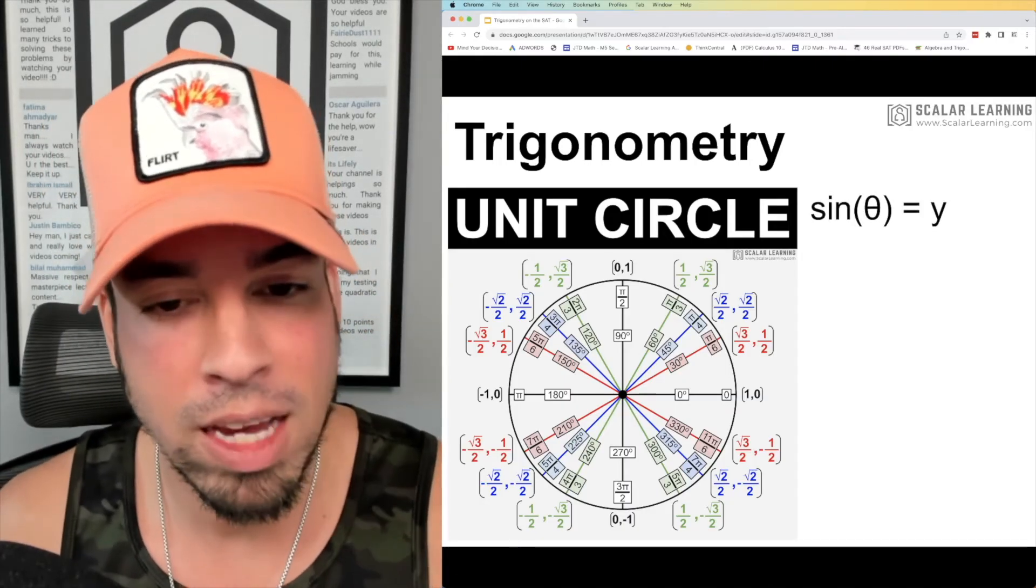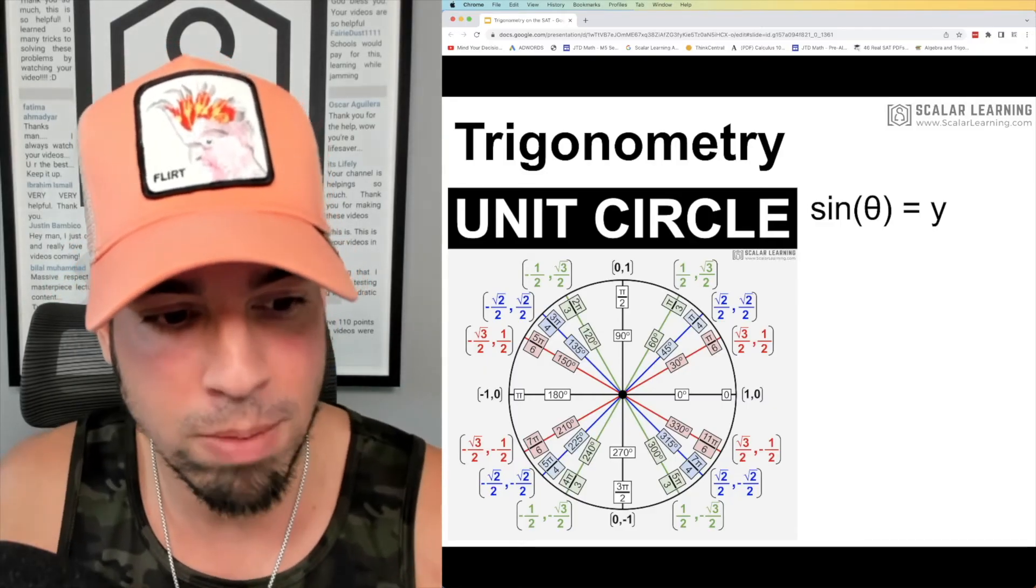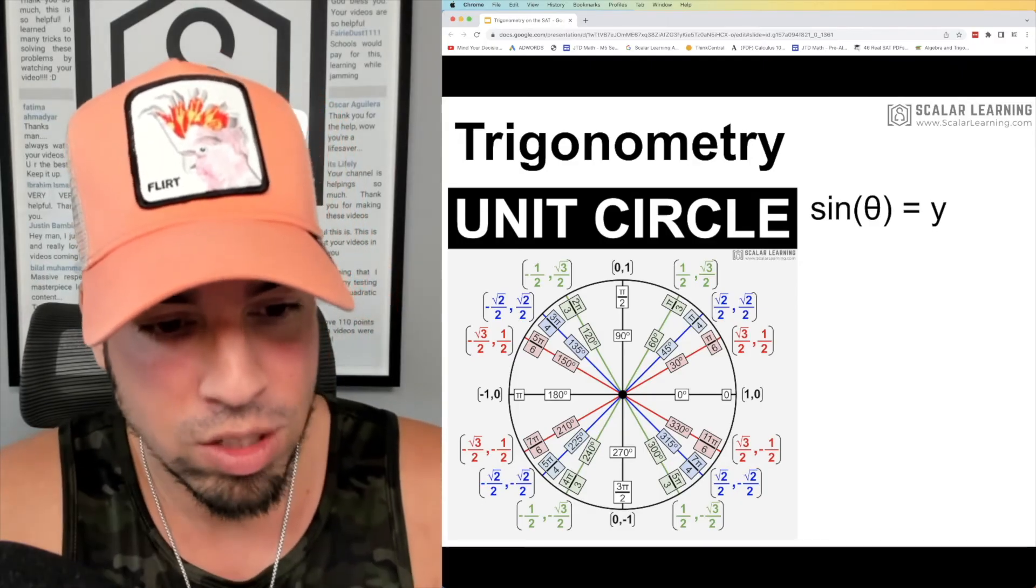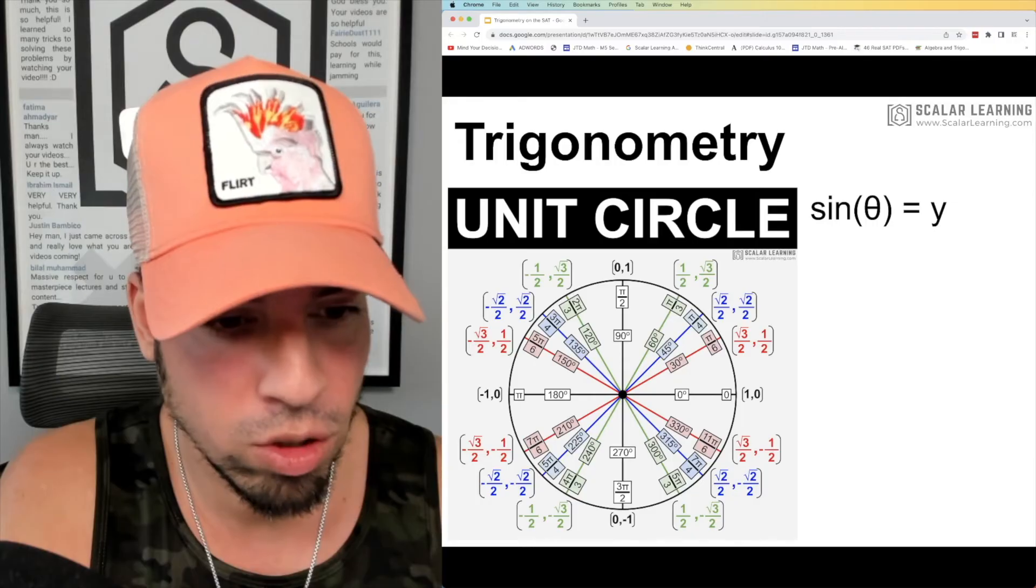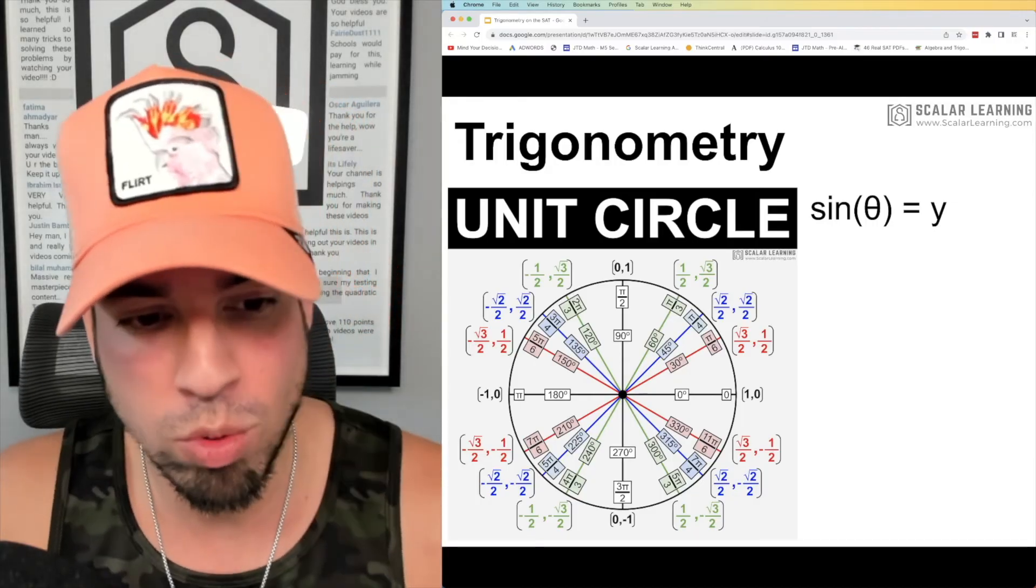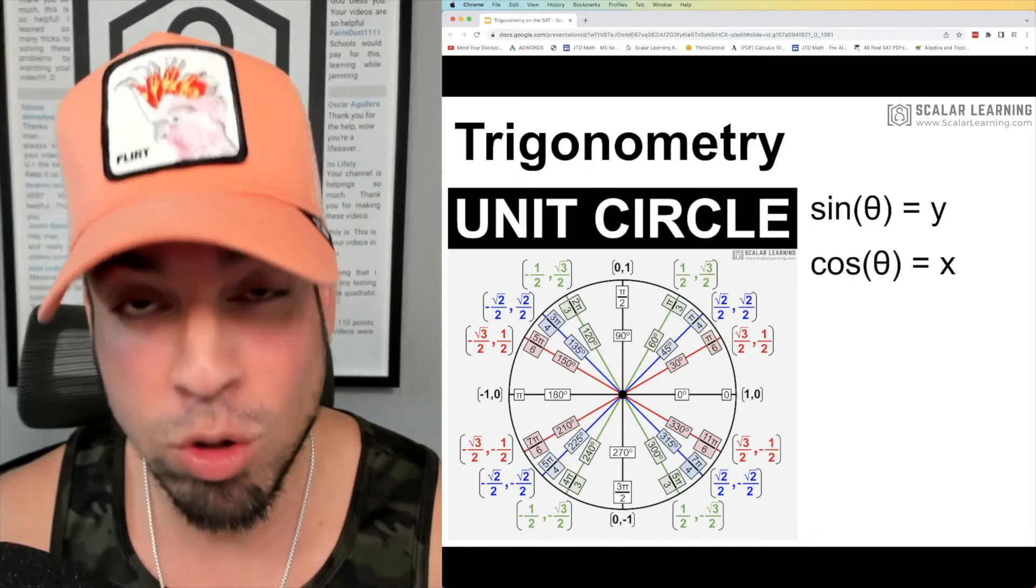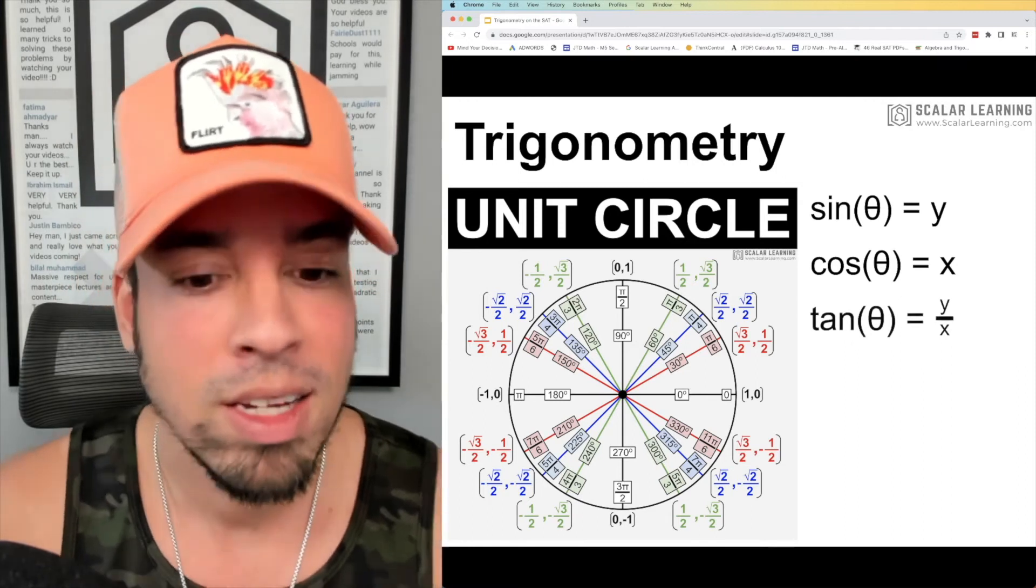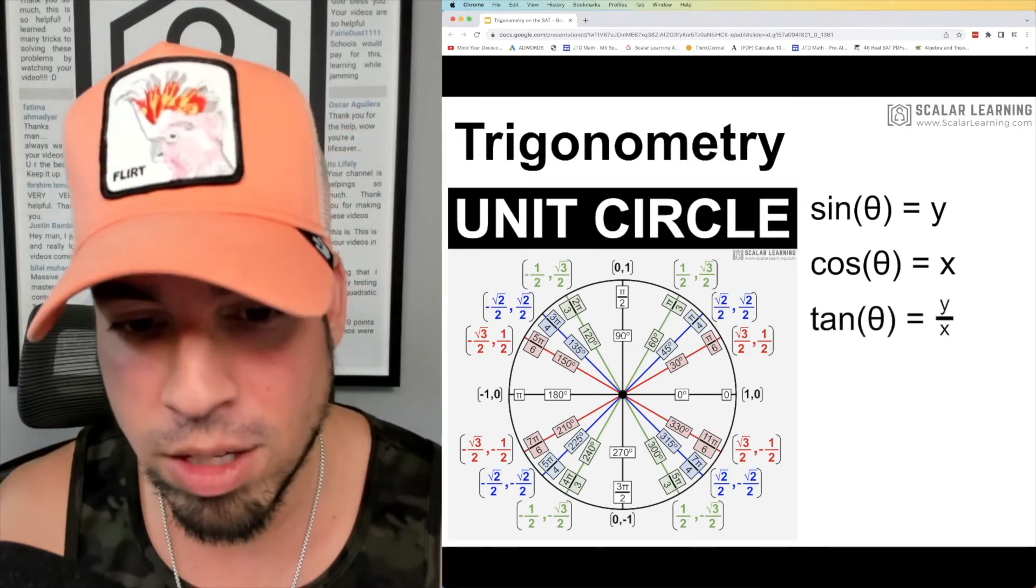So check it out. One thing to remember when we have this nice unit circle here is, first of all, sine of an angle value equates to the y value in those coordinates. So for example, you see 30 degrees down there—sine of 30 degrees is equivalent to that one half of the coordinate for the 30 degree corresponding coordinate. You see square root three over two comma one half, so sine of 30 would be one half. Cosine of a theta value corresponds with the x value in the coordinates. And last but not least, tangent of theta corresponds with the ratio of the y value over the x value.